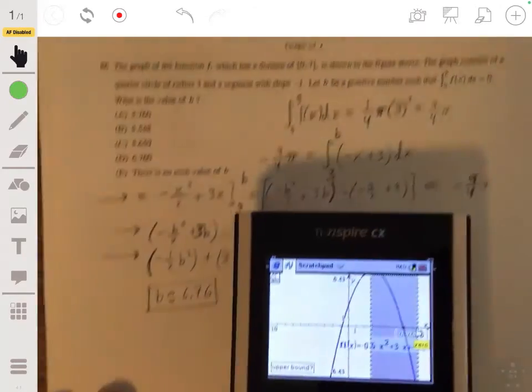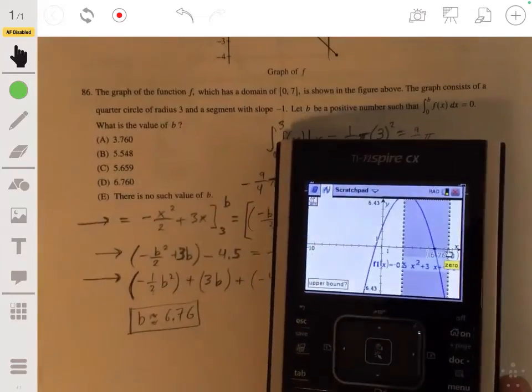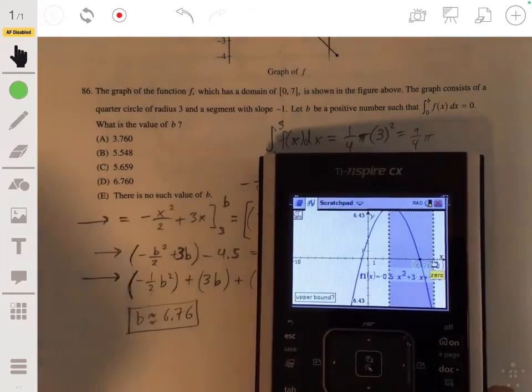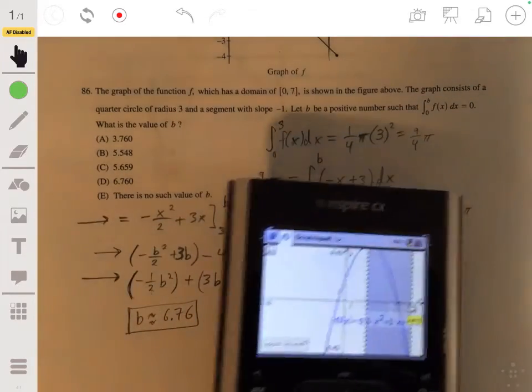And our zero there will be 6.76. Couldn't really think of another way to go about this. Maybe there's some clever trick, but I think this is the best way to go if you really want to understand this. So the answer would be D.